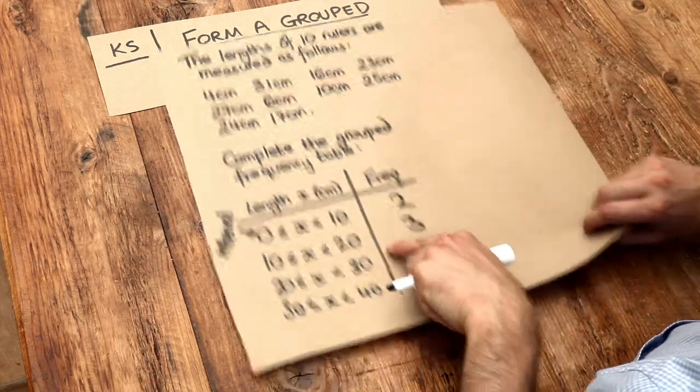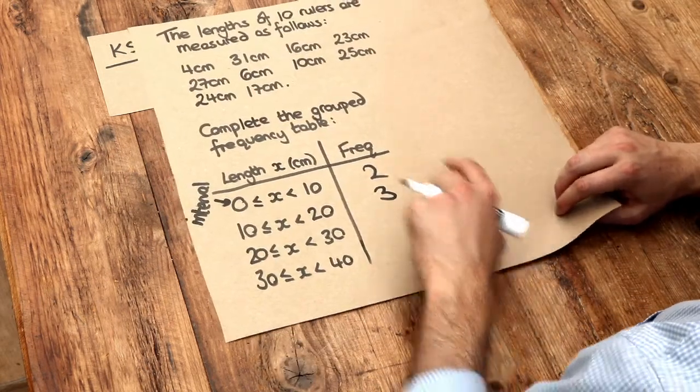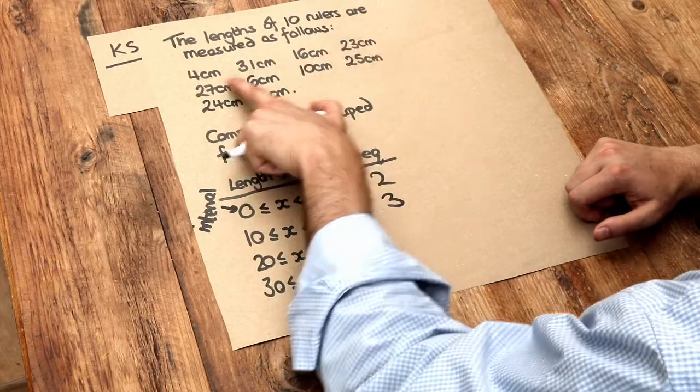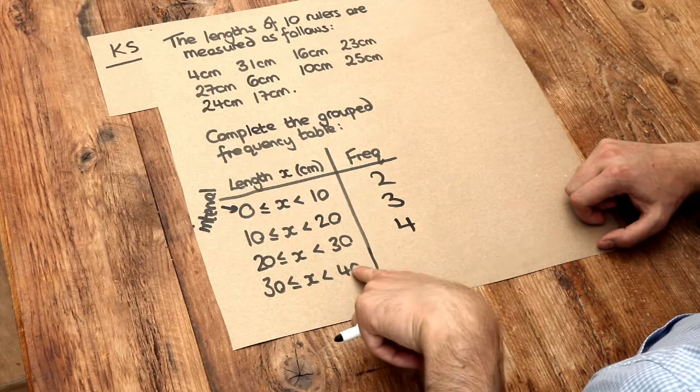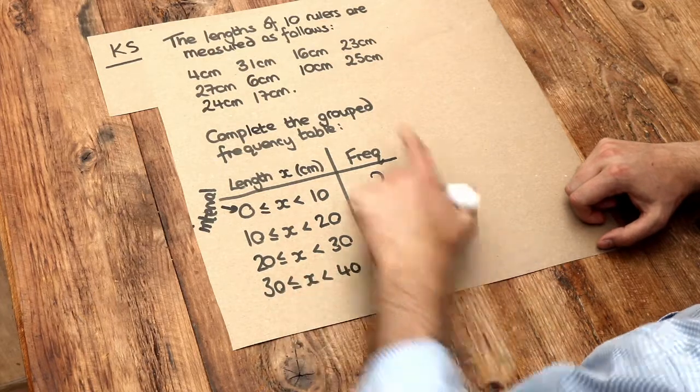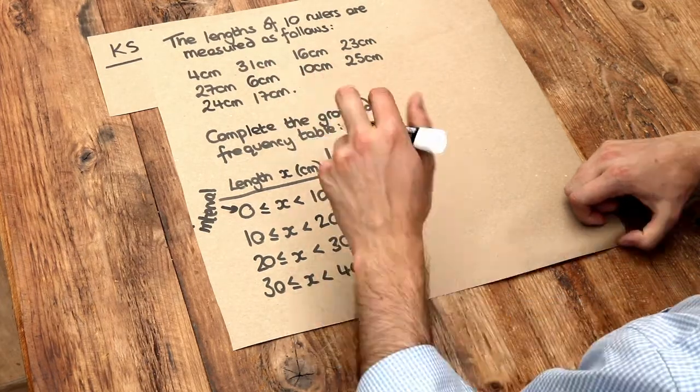What about 20 to 30? Well we've got 1, 2, 3, 4. And how many rulers between 30 and 40 centimeters? Well we've got 1, and that's it.